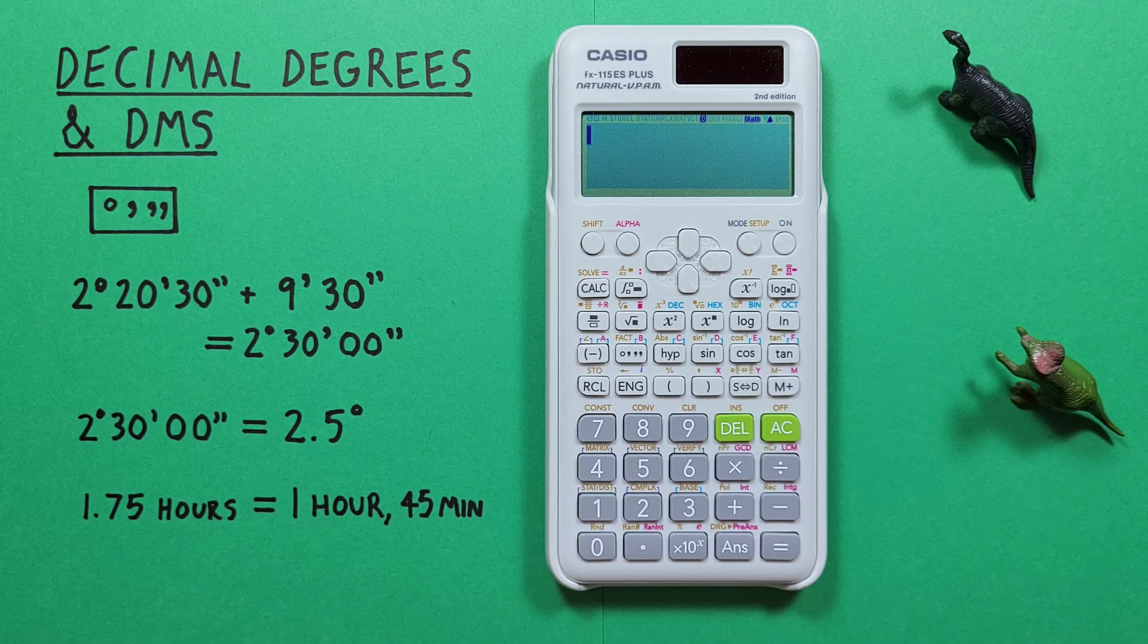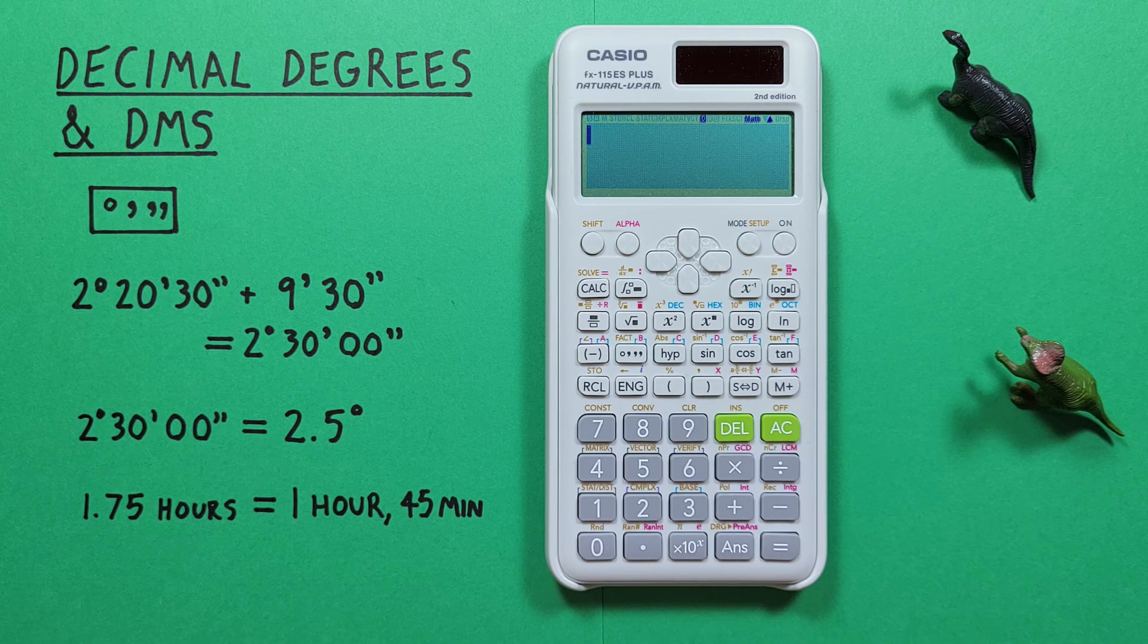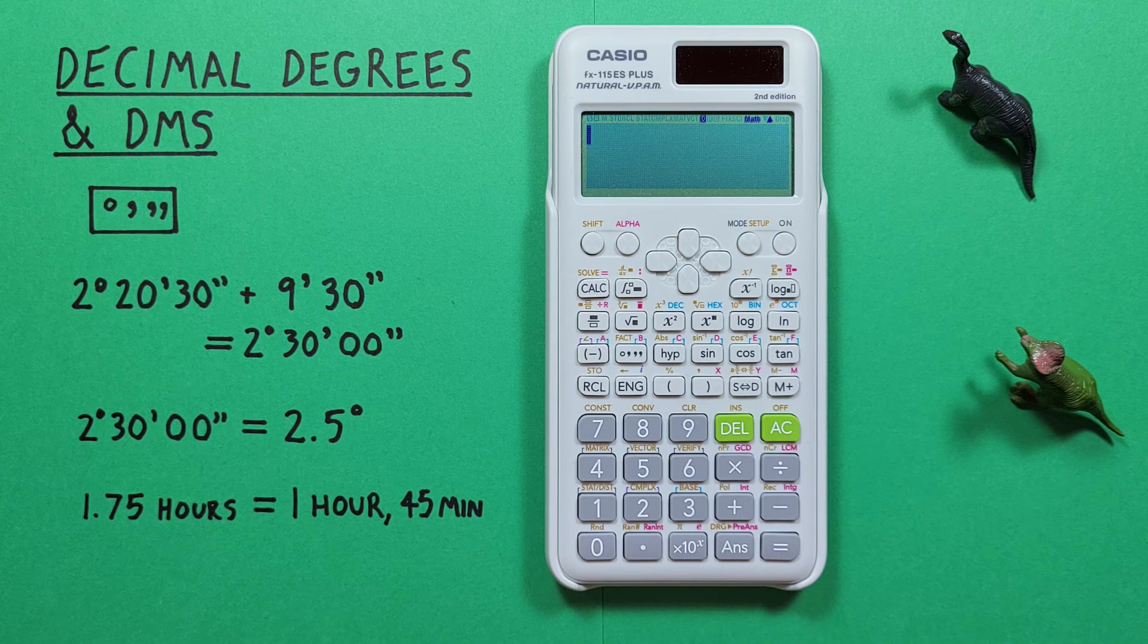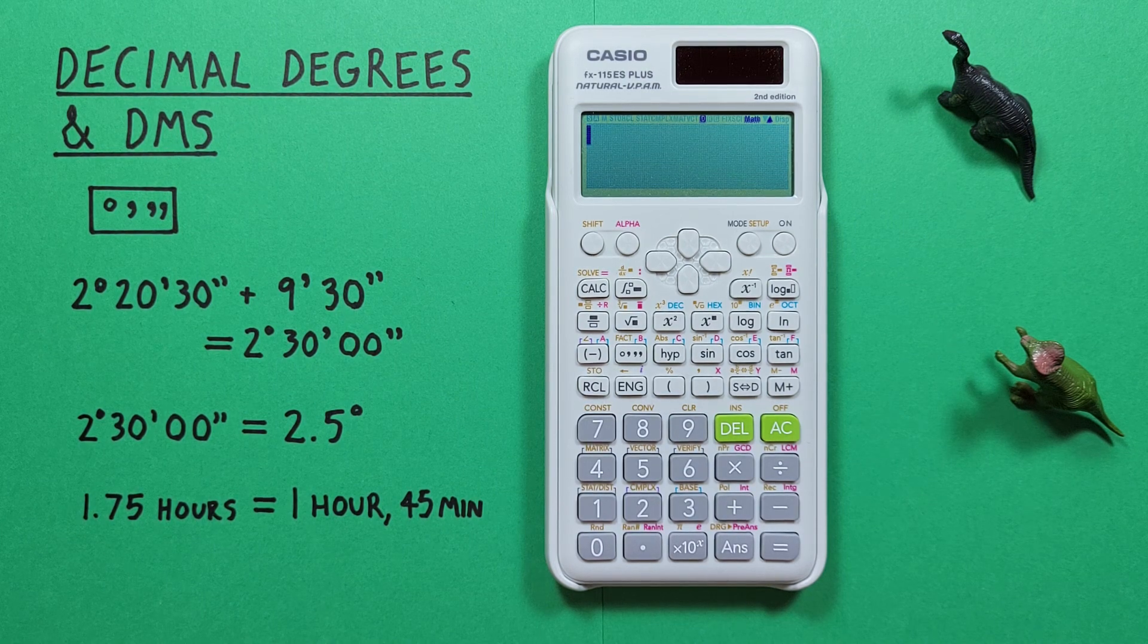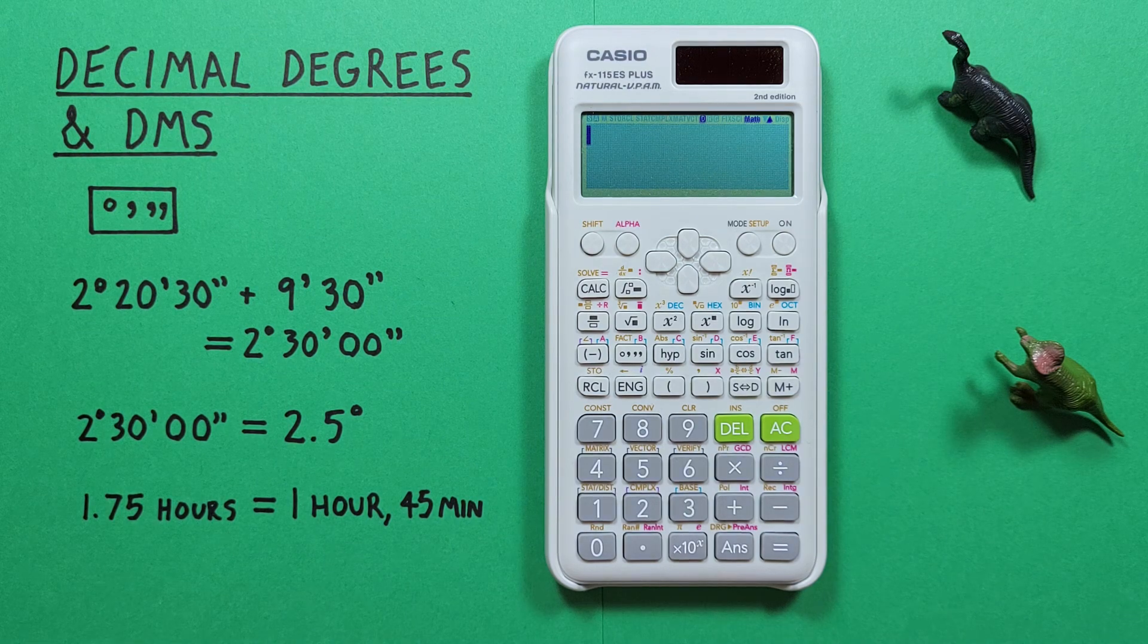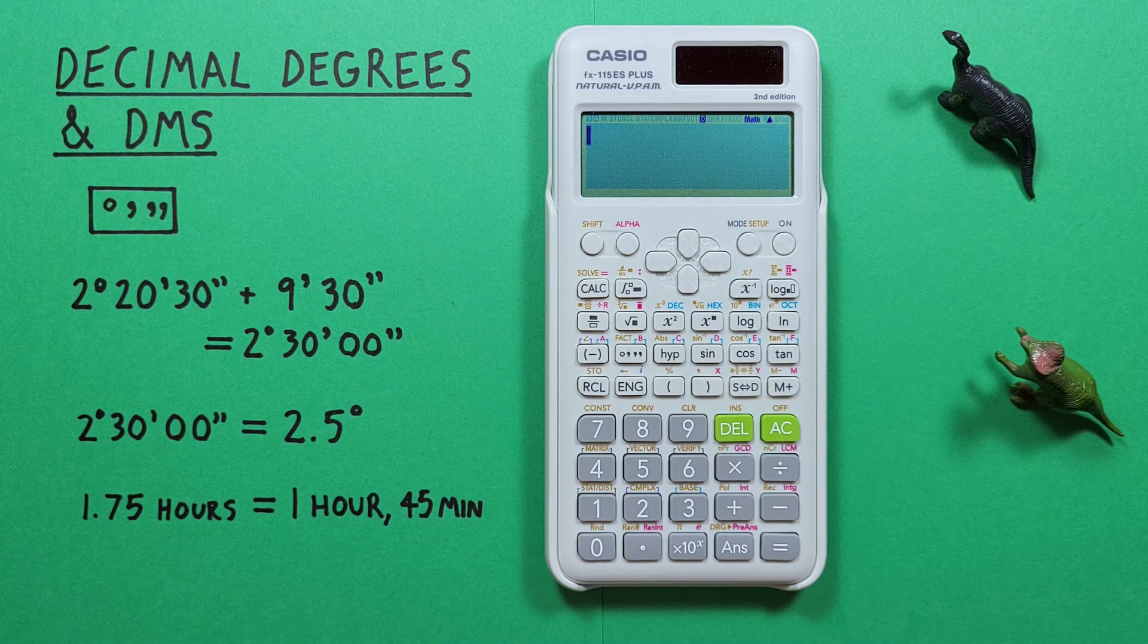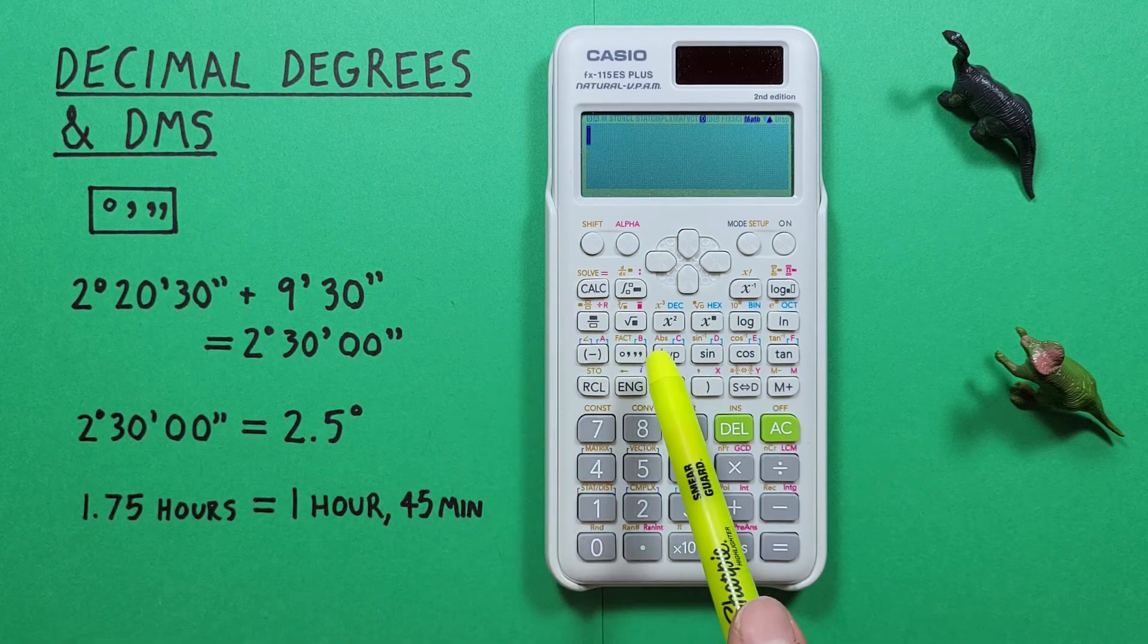Hello and welcome to HD Calcs. I'm Rick and in this video we're going to have a look at how we can use and convert between decimal degrees and degrees minute seconds on the Casio FX 115 ES Plus calculator. To do that we'll use the degree minute second key that looks like this located here.